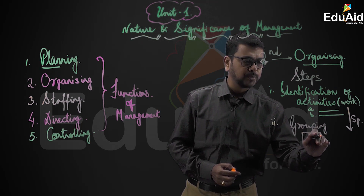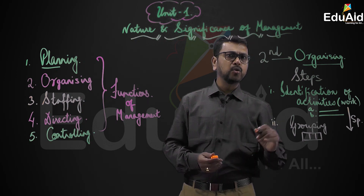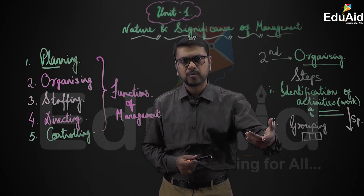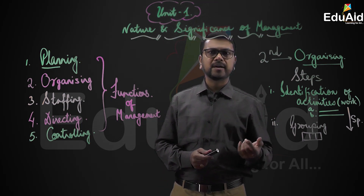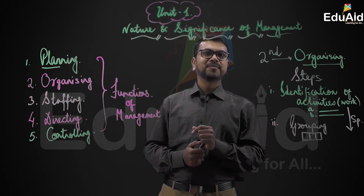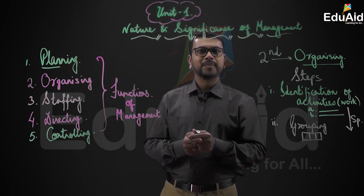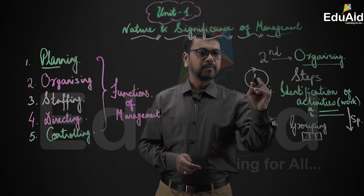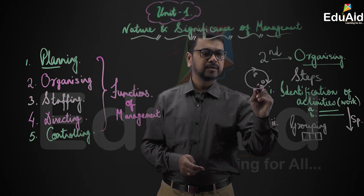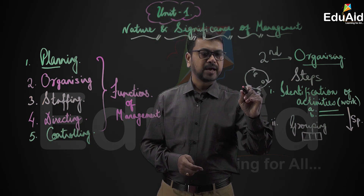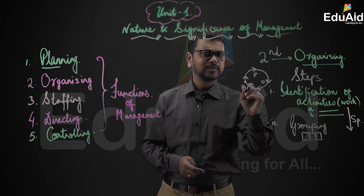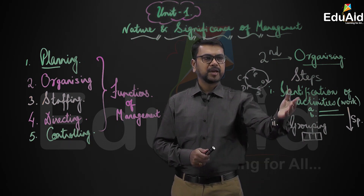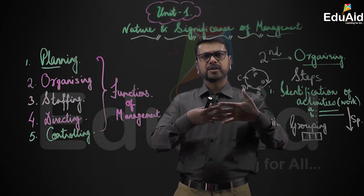This is known as grouping of activities — the tasks need to be grouped, and then decide who is to do the work, where, when, and how. Remember, when I started functions of management, I said functions of management are interrelated and interdependent — planning, organizing, staffing, directing, controlling. So organizing is in strong connection with planning.